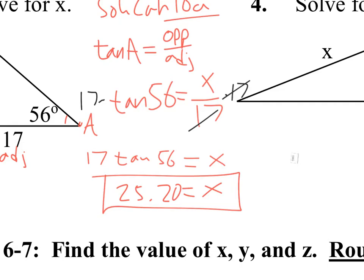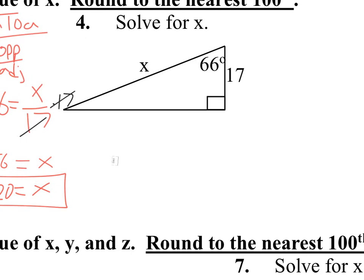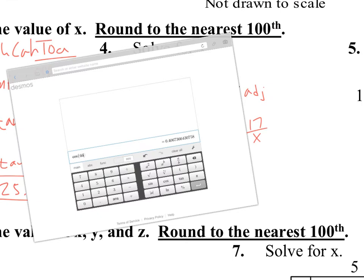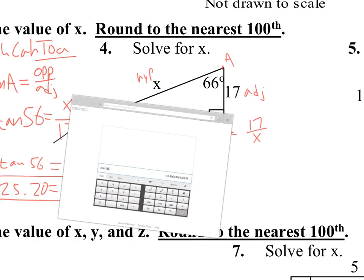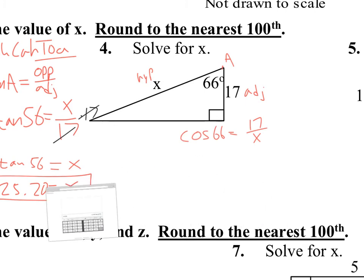The next problem has another missing side. Here's our angle — call it A. We have the adjacent and the hypotenuse, so we need to use cosine. Cosine of A is 17 over X. A is 66 degrees. This one is a little more challenging because X is on the bottom. Finding cosine of 66 gives us 0.4067.